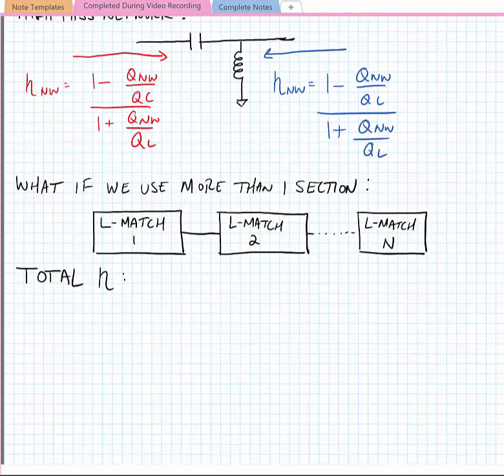Now we note that we can actually cascade more than one section, and this is actually how we did some of our earlier matching networks. And if we do this, we can just treat this as the product of individual L matching networks. So here we have a chain of an L match 1, L match 2, all the way out to L match n. And the total efficiency would just be the product of the efficiencies of all of the individual networks.